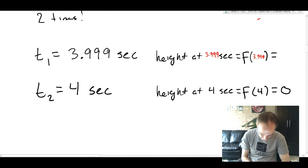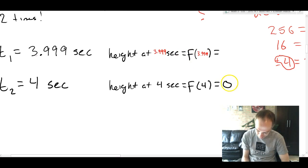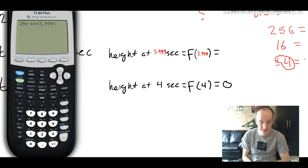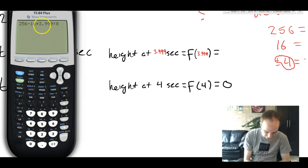Just like before, the next step is finding the height at both of these times. The height at 4 seconds, we already solved it because we knew 4 seconds the way we got it is because that was when the height was 0. So we know that. The height at 3.999 seconds, I can't do that in my head. So you go to your handy dandy calculator.